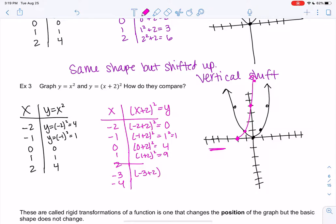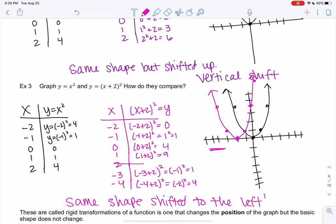So negative 3 plus 2 squared. Negative 1 squared is 1. So now we're starting to see that parabola shape. So I made a good choice on these numbers. So negative 4, we get negative 2 squared or 4. So negative 4 and 4. And now we can see that parabola shape. So again, it looks like the same shape, right? But now it got moved to the left. So we're going to do some shortcuts so we don't have to make tables like this every time.